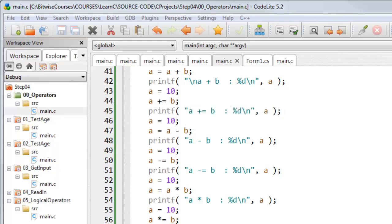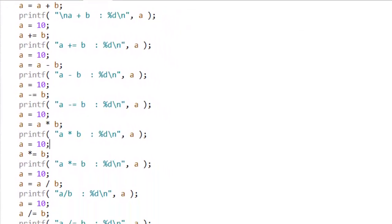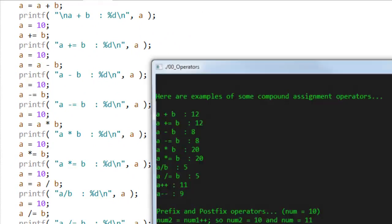Now here are some examples of compound operators in the sample project, 00 underscore operators. The best way to understand them is to run the code, and that's what I'm doing now.